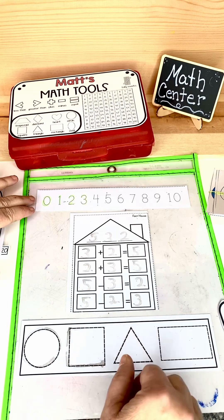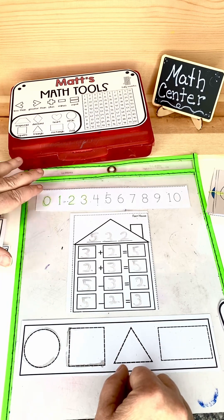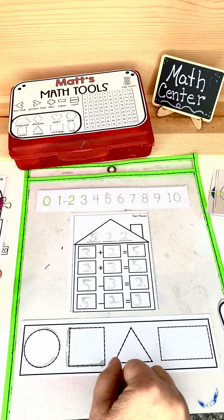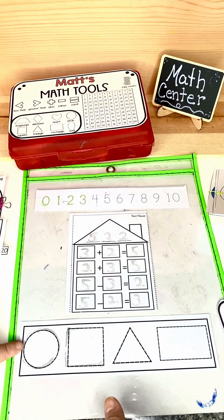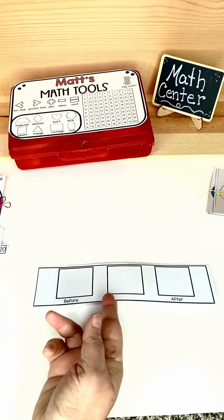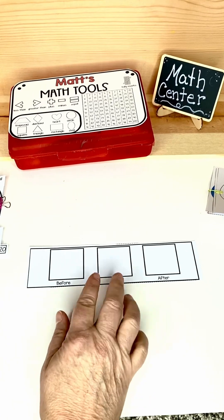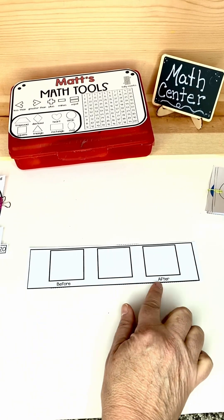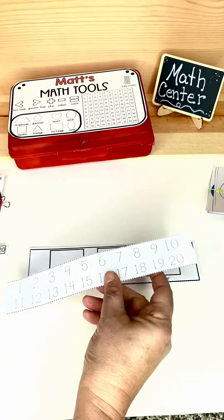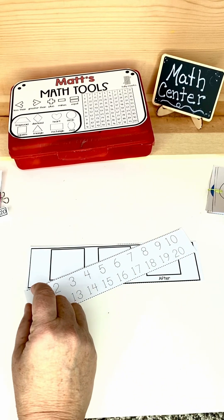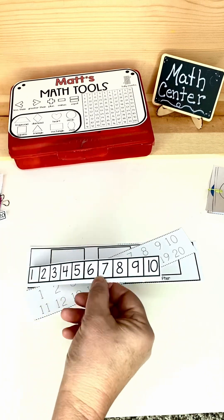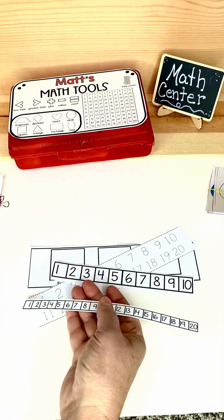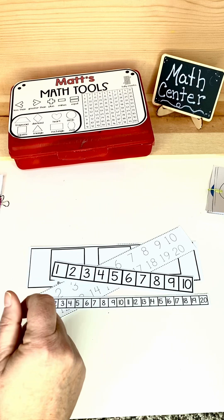This one you'll find that there is a traceable number line to 10. There's also one for 20. Fact Family House. Different kinds of shapes. This is where the students can write the number like nine and then say what comes before what comes after. Here's numbers to 20 that are traceable. Here are different number paths that students could use. One through 10. There's one for one through 20. You could also use this for non-standard measurement.